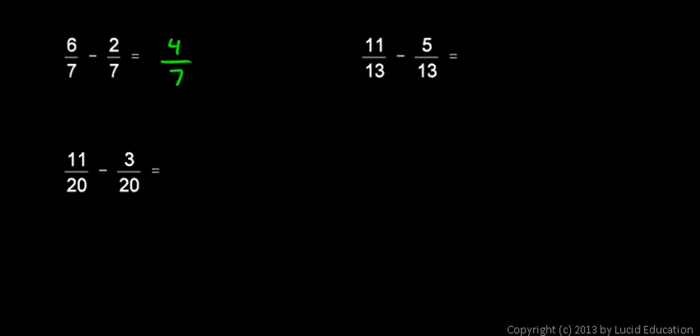In this next example, both fractions have a denominator of thirteen. In other words, the eleven represents eleven thirteenths, and the five represents five thirteenths. So they are the same type of fraction, they are both thirteenths, they're like fractions. So we can just do eleven minus five, that gives me six. Eleven thirteenths minus five thirteenths is six thirteenths.